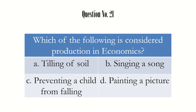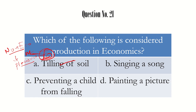The first question — that is the 21st question for us — is: which of the following is considered production in economics? In economics we clearly divide activities into economic activities and non-economic activities. Economic activities help us earn money, whereas non-economic activities are done for pleasure. The first option is tilling of soil, which is done by the farmer and is a production activity — an economic activity. So there is a good chance of this being the answer.